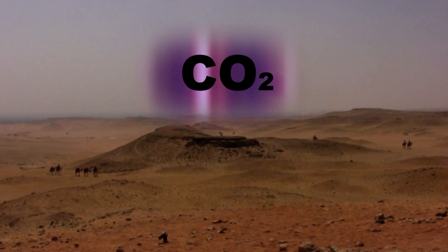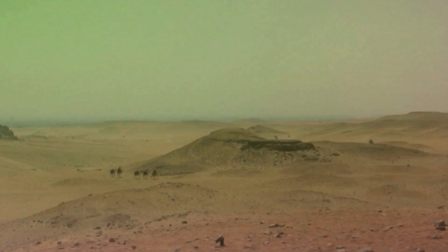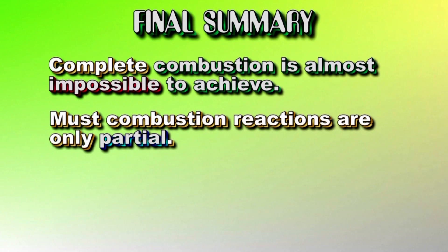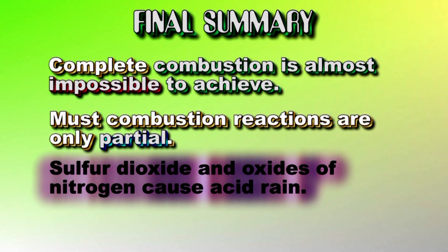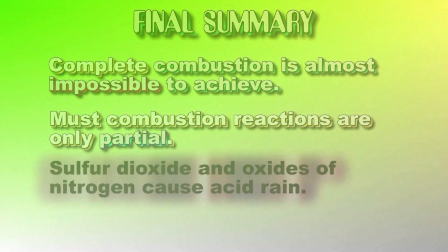Carbon dioxide causes global warming. Complete combustion is almost impossible to achieve — most combustion reactions are only partial. This leads to the production of other pollutants, which can cause things like acid rain.